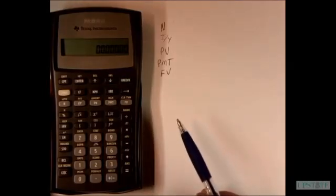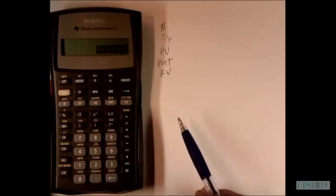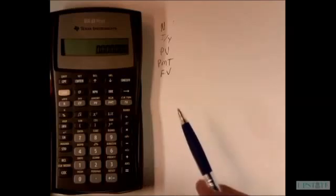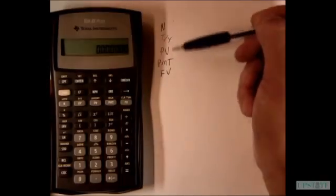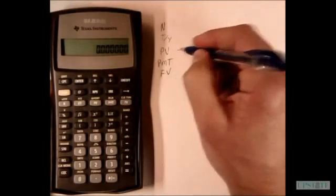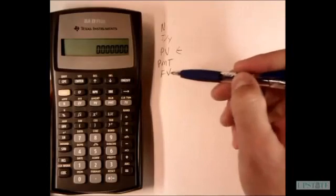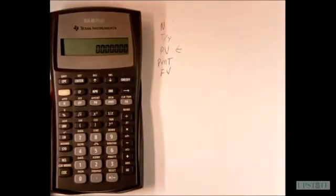Now whenever we set up an equation with five variables, if we're solving with a single equation and five variables, we can only have one unknown. So basically what we're saying here is that if we have these five and we're trying to solve, say, for a present value, we have to have a value that goes into each of these four others.